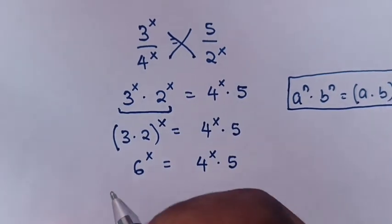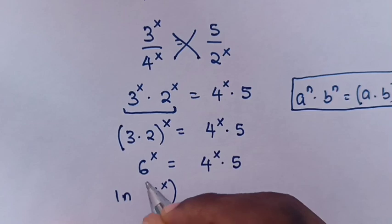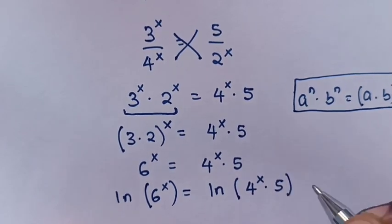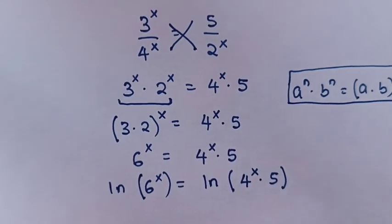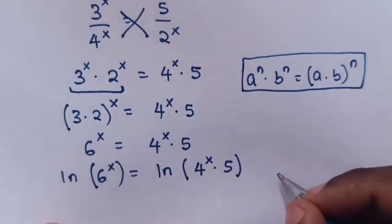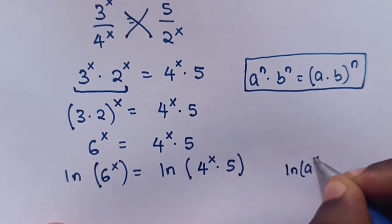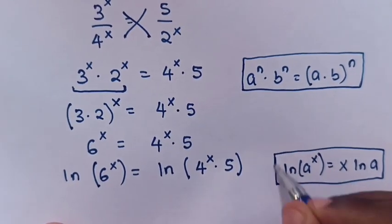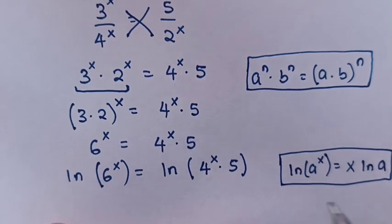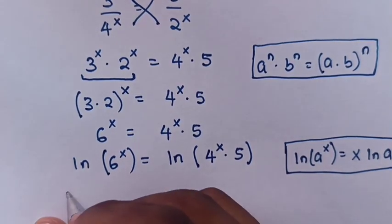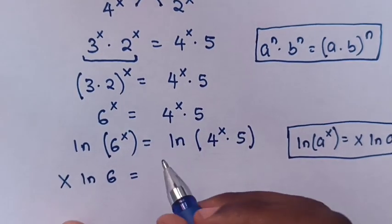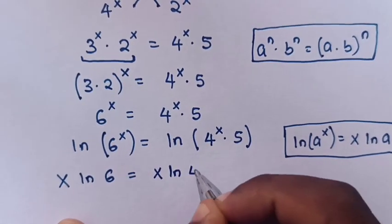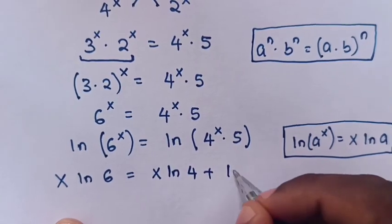Then we'll apply ln on both sides. So it will be ln(6^x) is equal to ln(4^x times 5). When we apply ln, we use the rule that ln(a^x) is equal to x·ln(a). So in our equation, it will be x·ln(6) is equal to — expanding inside the bracket — x·ln(4) plus ln(5).